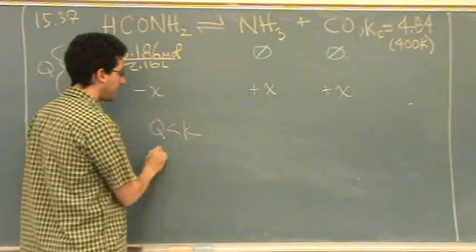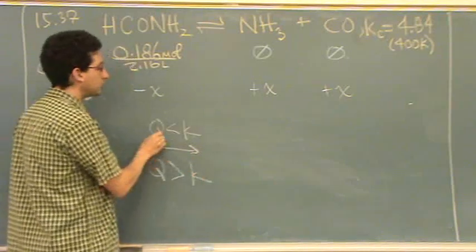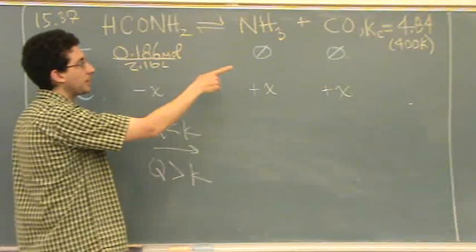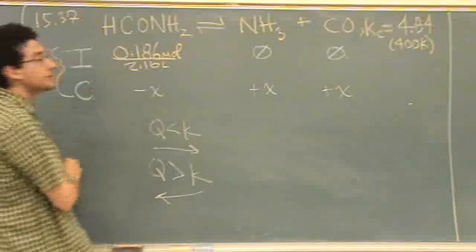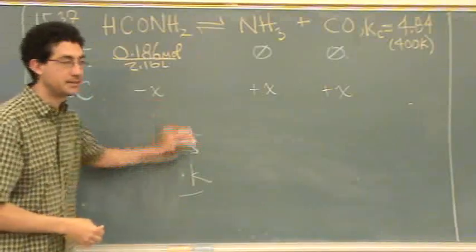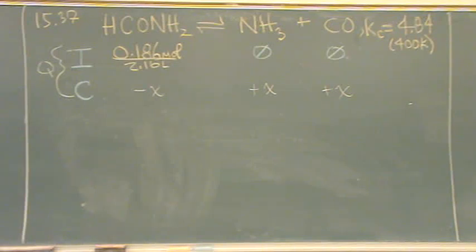You determine which way you're shifting based on whether Q or K is bigger. For example, if Q were 2 and K is 4, it still has to shift to the right; if Q were 6 — greater than K — it would have to shift back to the left. You don't need to have zeros; it just makes the problem way easier. And it doesn't matter if it's gases, aqueous, or whatever — if a value is not given, we assume it's zero.